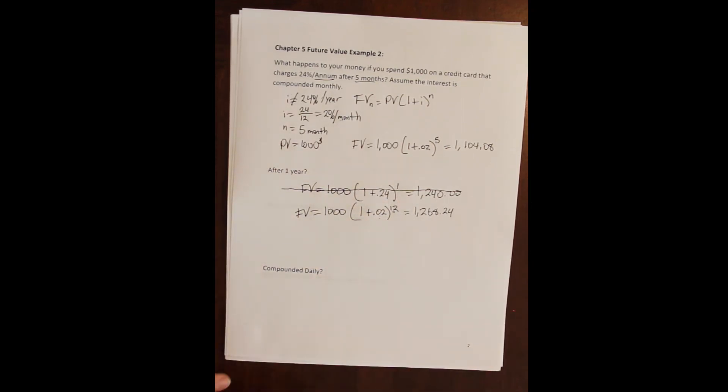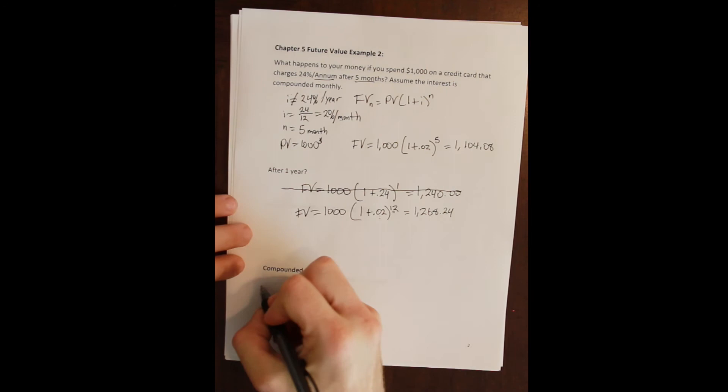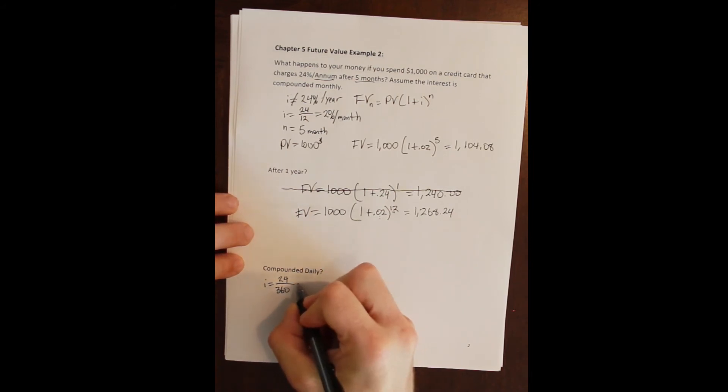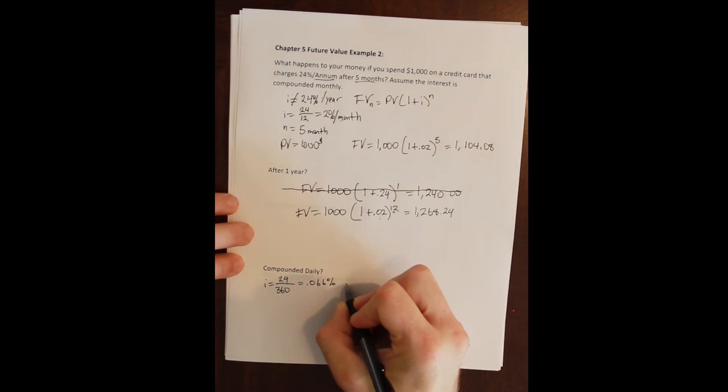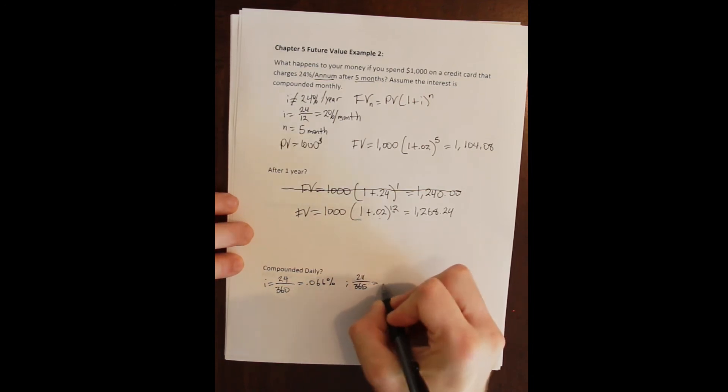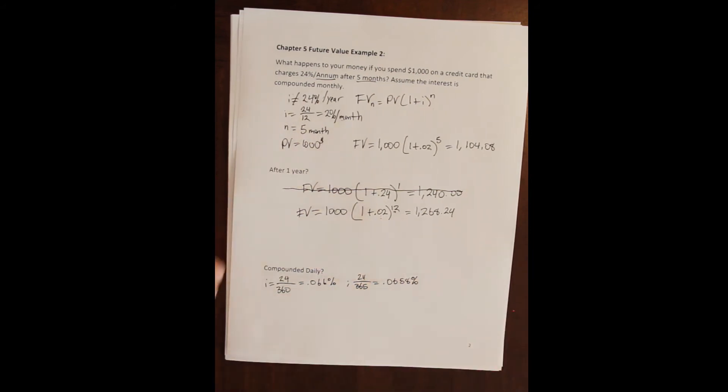Okay, now let me show you an example of what happens if we compound daily, and this is actually the way that most credit cards calculate their interest. They compound an annual rate at a daily occurrence. So they compound their 24 percent annual interest at 360 days a year, which would be 0.066, or 365 days a year, which would be 0.0658.